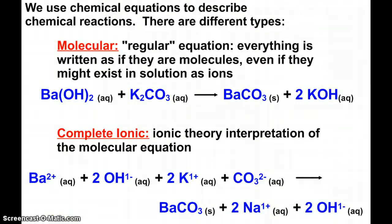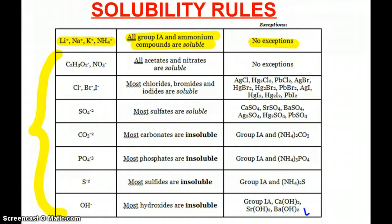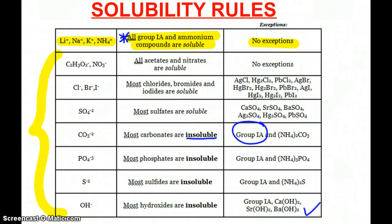We use chemical equations to describe chemical reactions, and there are different types. The ones you're familiar with are molecular equations — regular equations where everything is written as if they are molecules, even if they might exist in solution as ions. Here we see the reaction between barium hydroxide and potassium carbonate, both aqueous. We can check that on our solubility rules: barium hydroxide is a soluble hydroxide, it's an exception, and potassium carbonate is a group 1 compound — all group 1 compounds are soluble. Even though carbonates are mostly insoluble, group 1A ones are an exception.